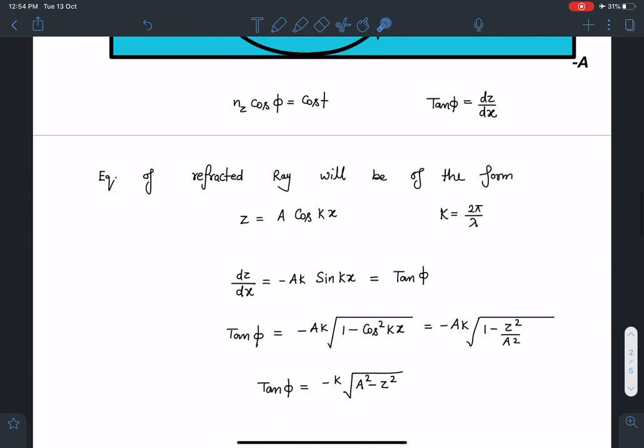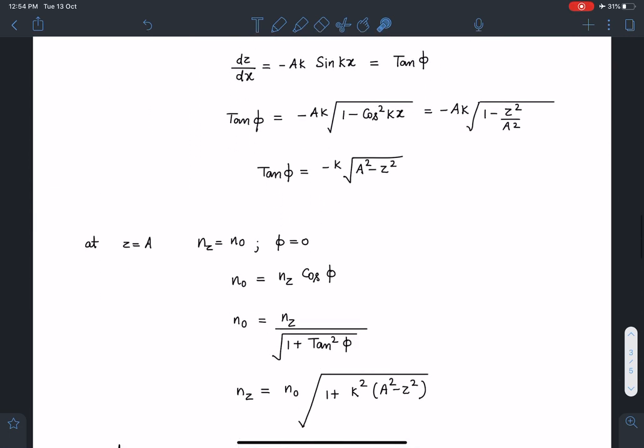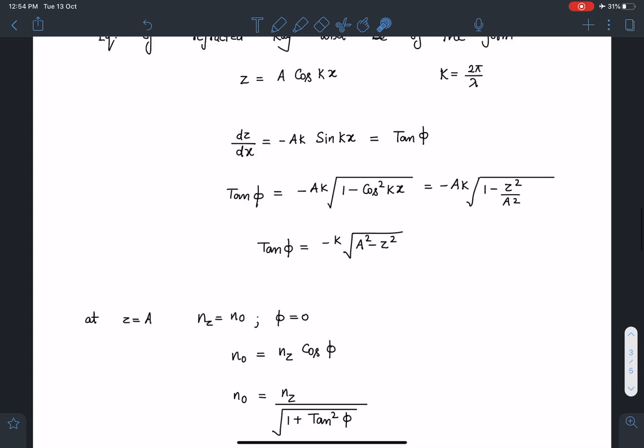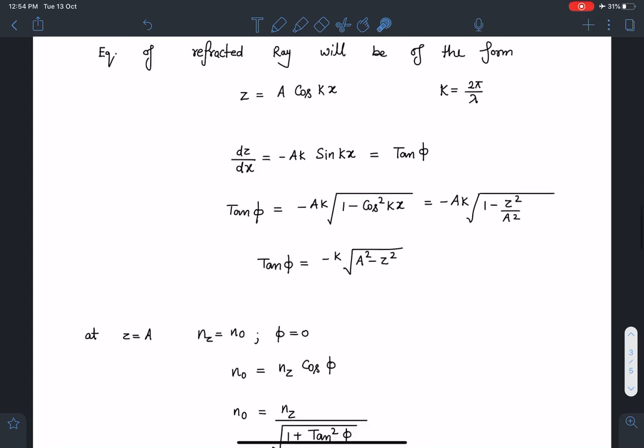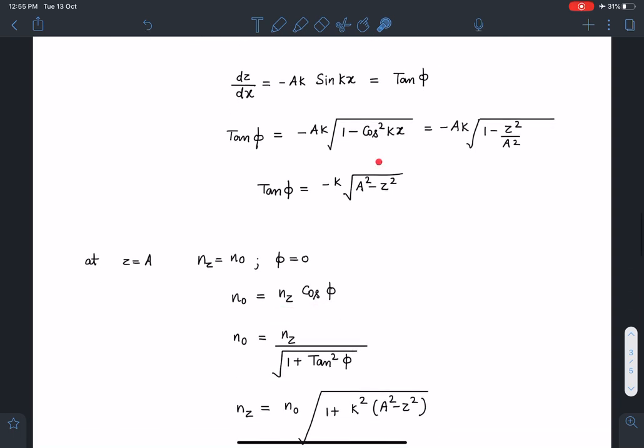So at z equal to a, that is n0 cos phi that is going to be n0, cos phi will become 1. So n0 cos 0 which is n0 and that should be equal to nz cos phi. So I can substitute here this tan phi value.